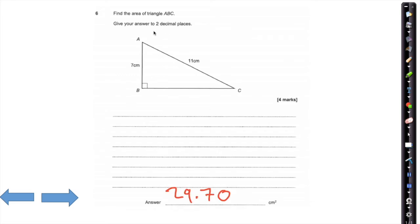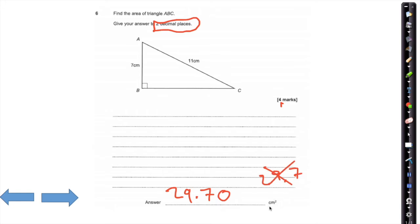Note that in the question it says give your answer to 2 decimal places — one of these marks will be for putting in those two decimal places. If you put 29.7, you've missed a mark. The correct answer is 29.70.